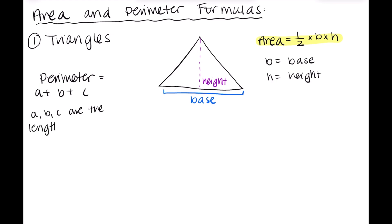Now we'll get into perimeter. Remember, the perimeter is the distance around the shape. So perimeter's formula would be a plus b plus c, where a, b, and c are the lengths of the sides of the triangle.